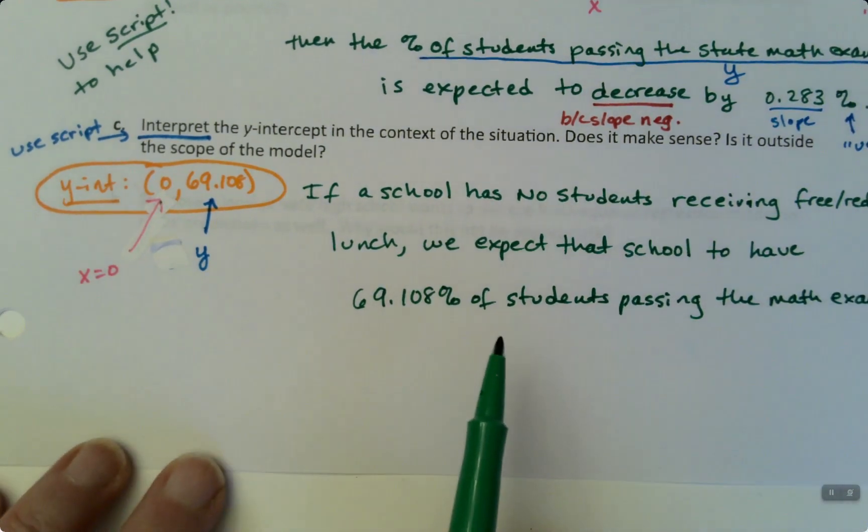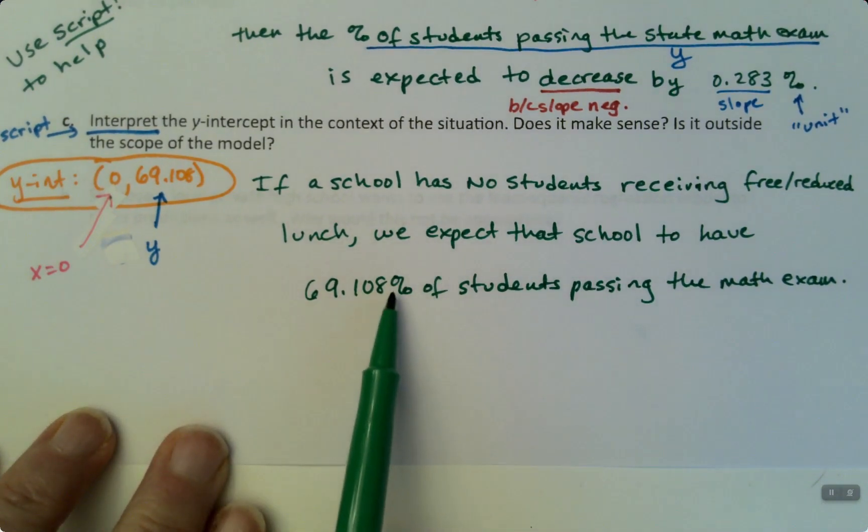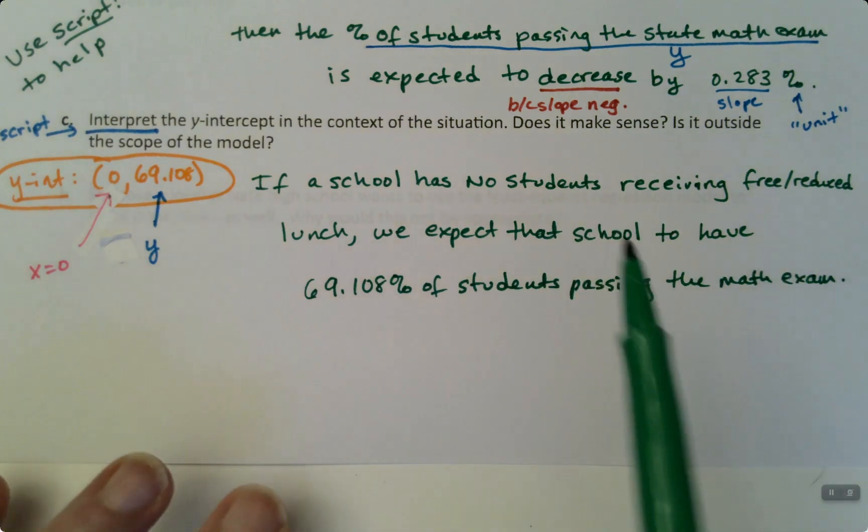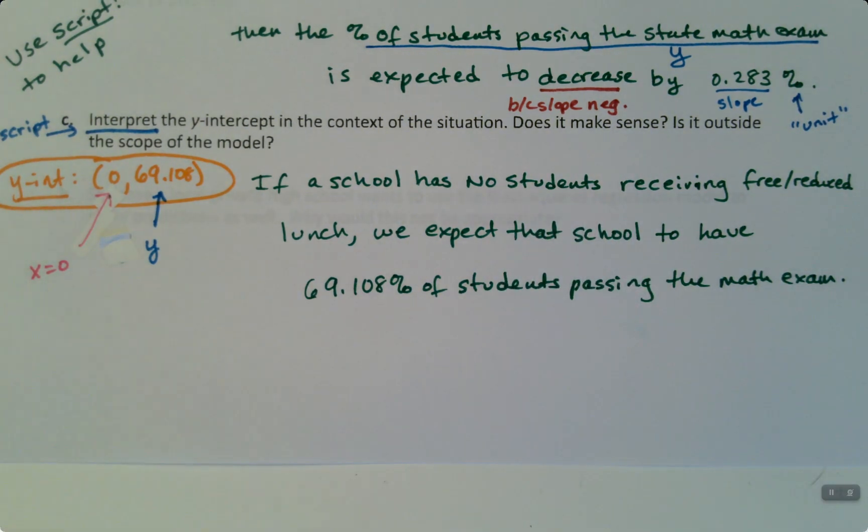To have 69.108% of students passing the math exam. So you'll notice I'm including units here. There's units there with the percentage, technically it'd be like no percent, but it's fine, no students. So I'm saying, hey, if X is zero...